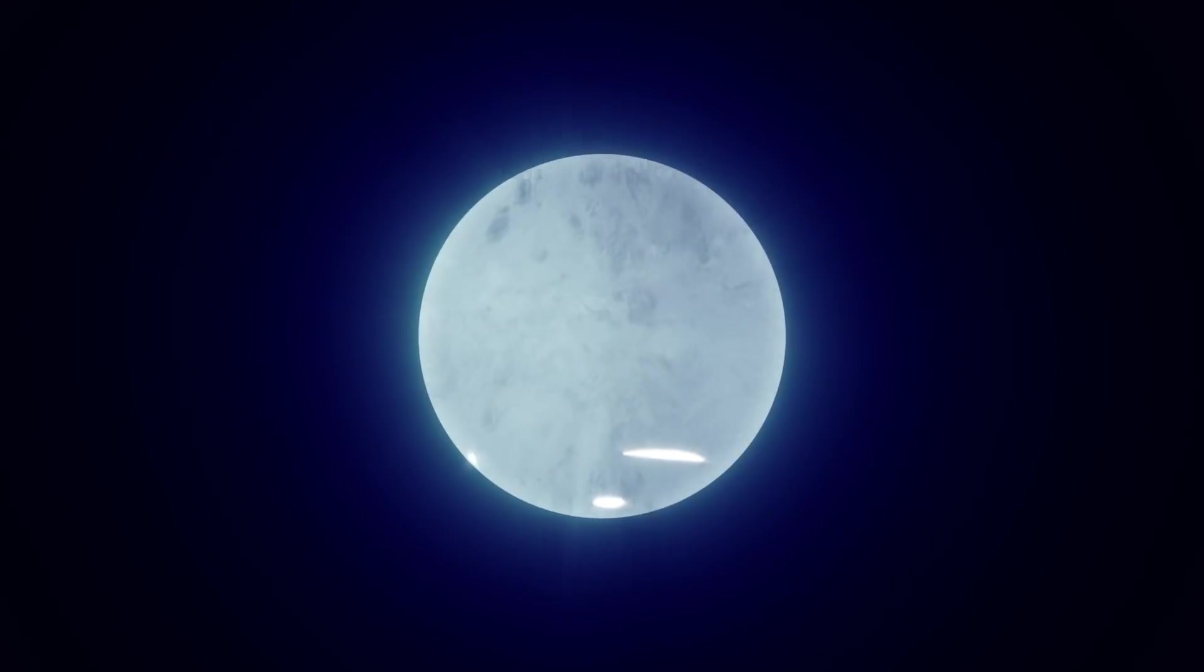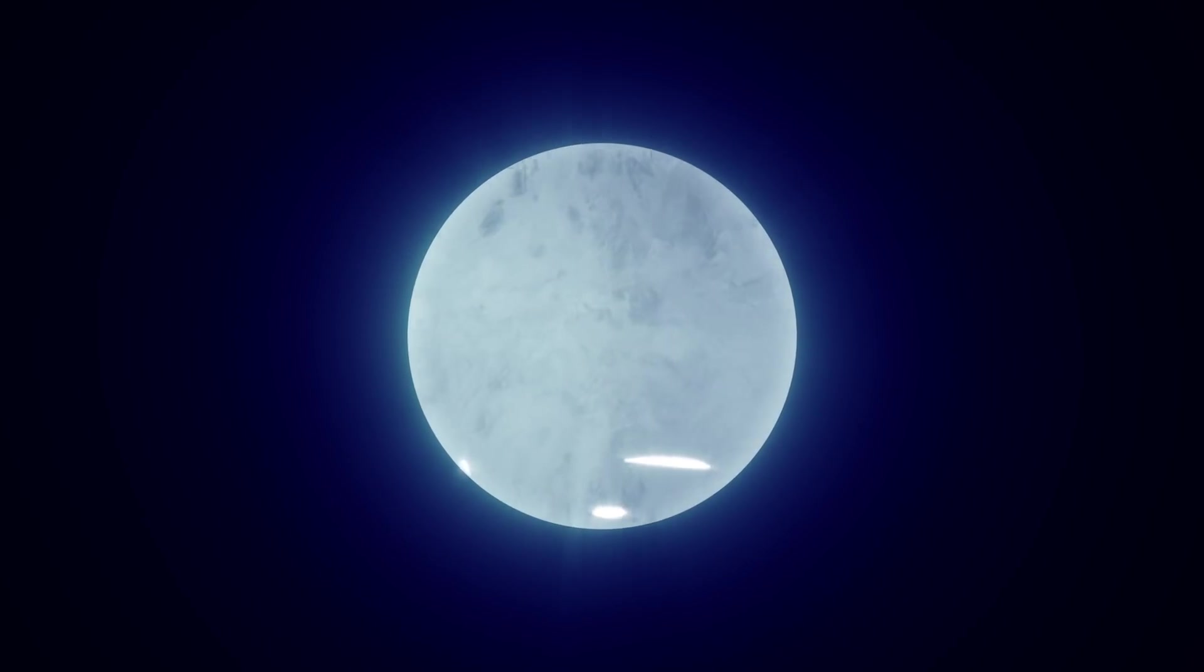This is J0030, a type of dead star called a pulsar, located about 1,100 light-years away in the constellation Pisces.